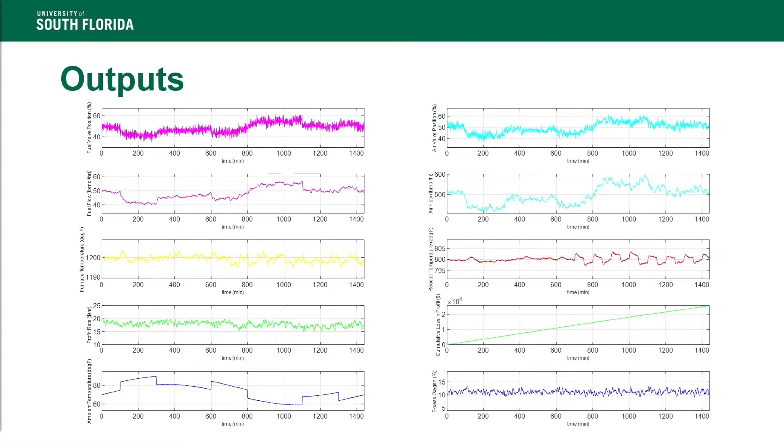The outputs are presented here. The furnace temperature varies from the set point by plus or minus 5 degrees Fahrenheit, and the reactor temperature varies from the set point by plus or minus 3 degrees Fahrenheit. Now, the control scheme will be demonstrated in Simulink.